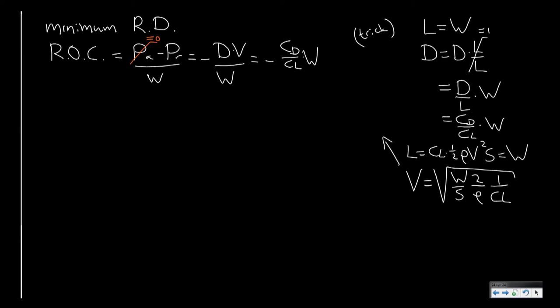So we can insert this airspeed equation in our rate of climb equation and then we get the following: weight over S, 2 over rho, 1 over CL, and of course we have to divide the whole equation by the aircraft weight.